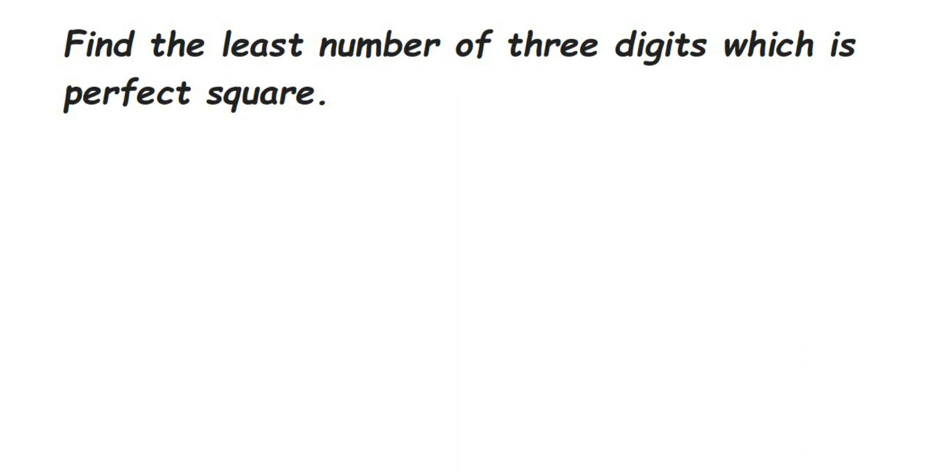Hey everyone, here's a question from square and square root. The question is: find the least number of three digits which is perfect square. So we have to find out the smallest three-digit number which is perfect square. Perfect square means we can able to find out square root, that is we're going to get the proper square root without any decimals.